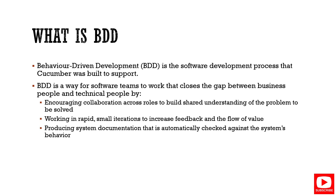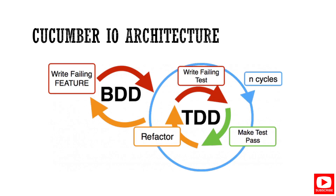This is the Cucumber architecture. In a normal TDD cycle, you first write some tests, execute them, and there may be failures. After that, you make them pass by adding conditions, then refactor. If any new test cases are added that fail, you make them pass and refactor again. This cycle continues all the time.